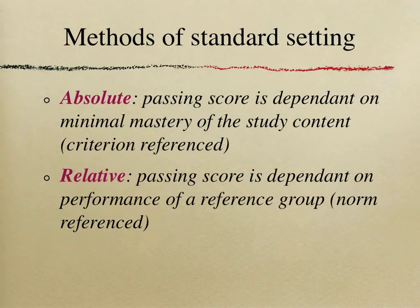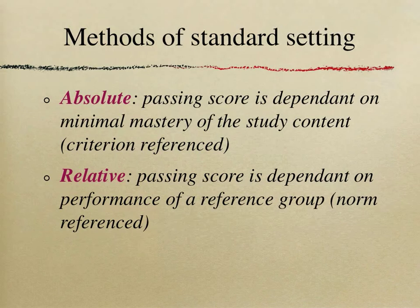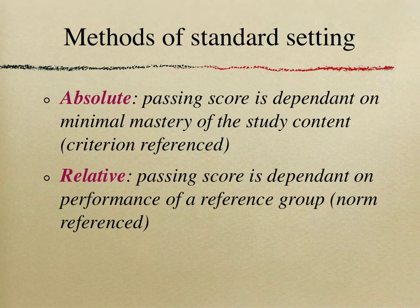In the absolute methods, also known as criterion-referenced methods, we set a pass score that is individualized — I will go through more details about this in the next video. In the relative methods, also called norm-referenced methods, rather than looking at individual candidates we look at a whole group of examinees and set a pass mark for the group as a whole. We will cover that in the second video, so bear with me and I will see you very soon.